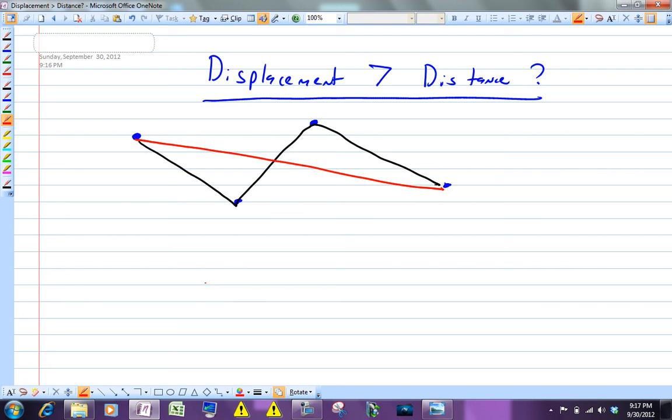The best you can do is be the same. So if you don't change direction at all, your distance and your displacement will be the same. If these dots were on a straight line, then your displacement and your distance would be equal. Otherwise, your distance is going to be greater than the magnitude of your displacement, always.